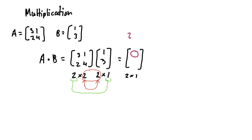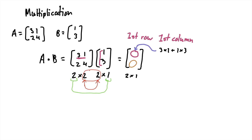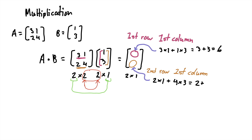To find the first entry, we look at the first row and first column. We multiply the first row of matrix A by the first column of matrix B: three times one plus one times three. For the second entry, we look at the second row of the first matrix times the first column of the second matrix: two times one plus four times three. So our answers come out to three plus three equals six, and two plus twelve equals fourteen. So the resulting matrix is going to be six, fourteen.